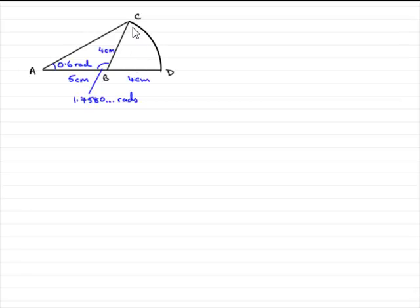So, let's start with the area of the sector. In order to find the area of the sector, what we need to know is this angle in here. And that's easy because in the previous part, we found out that angle ABC was 1.7580 and so on radians.